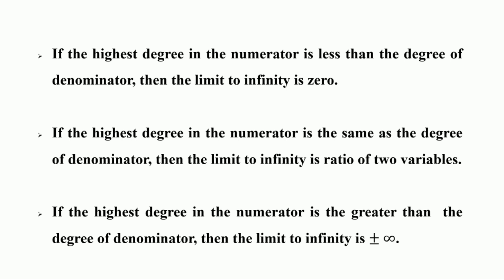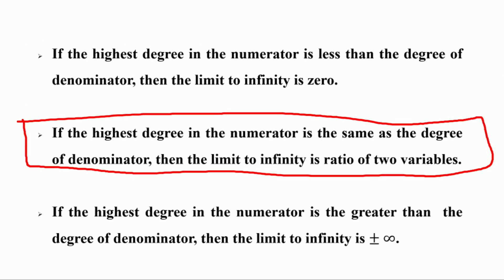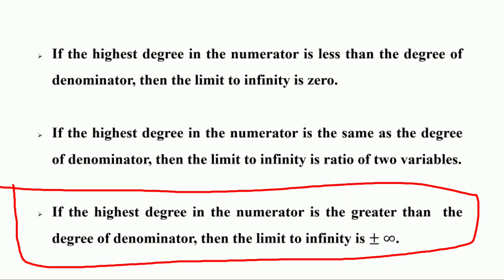If you are asked to find the limit at infinity, there are three rules to solve it. The first rule is that if the highest degree in the numerator is less than the degree of the denominator, then the limit to infinity is 0. Secondly, if the highest degree in the numerator is the same as the degree in the denominator, then the limit to infinity is the ratio of the leading coefficients. And finally, if the highest degree in the numerator is greater than the highest degree of the denominator, then the limit to infinity is negatively or positively infinite.